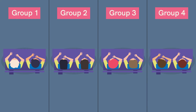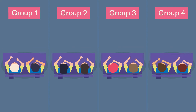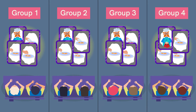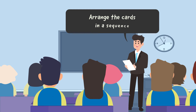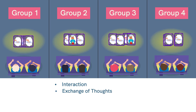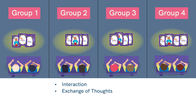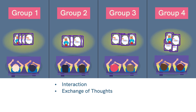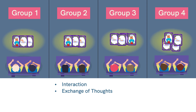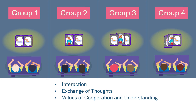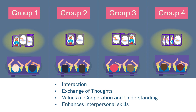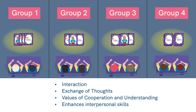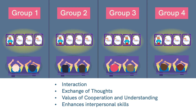Now start by dividing the class into four groups. Once we have the groups, distribute one set of picture cards to each. Ask the students in the group to arrange the cards in a sequence. This is essential because students will interact with one another, exchange their thoughts, and apply them while building the sequence. In this way we are inculcating the values of cooperation and understanding, as well as enhancing their interpersonal skills.